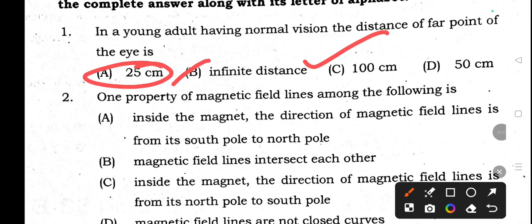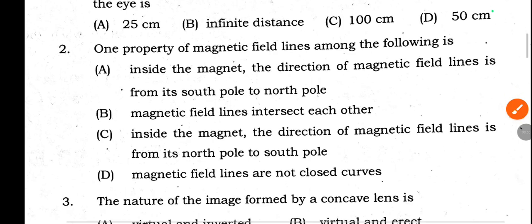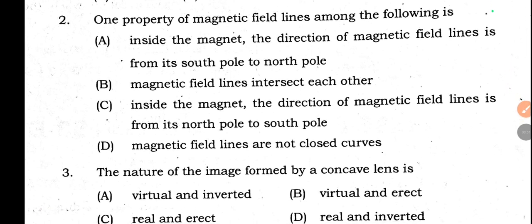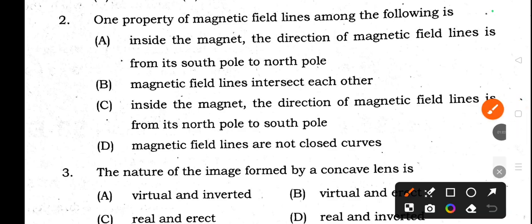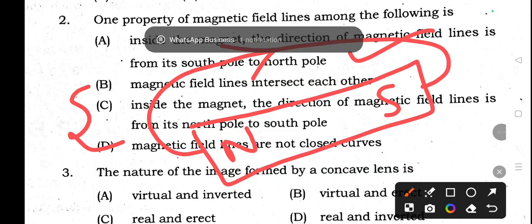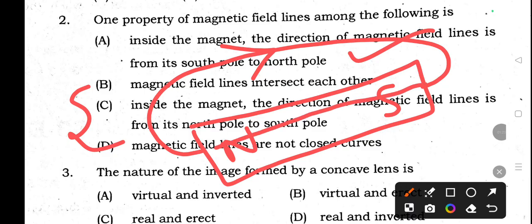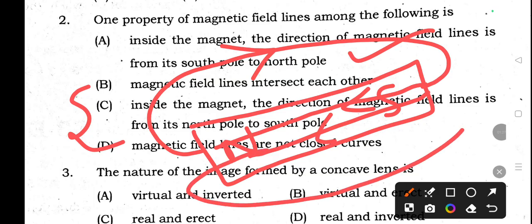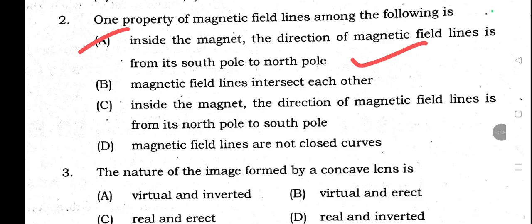Up to 25 centimeters and up to infinite distance, those objects we can see very clearly. Second question: One property of magnetic field lines among the following is - inside the magnet, the direction of magnetic field lines is from south pole to north pole. It's the right answer. We don't need to see other options. If we take a bar magnet with north pole and south pole, the magnetic lines arise from north pole and join together at south pole.